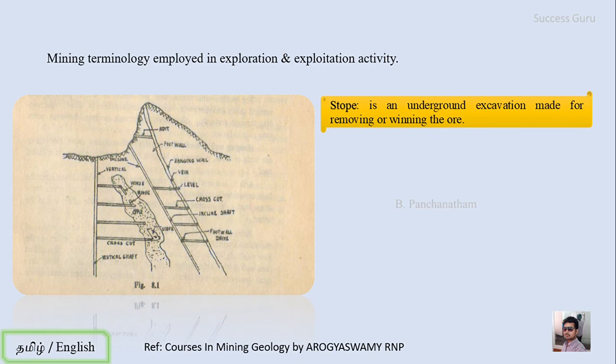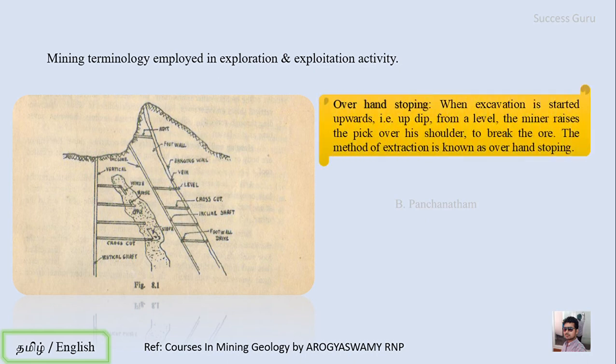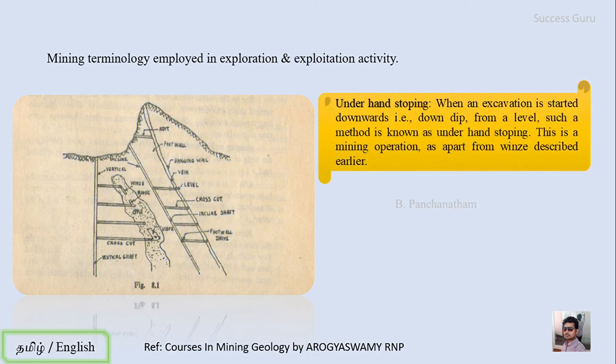The next term is stope — an underground excavation made for removing or winning the ore. If the stope is made above your shoulder level it is called an overhand stope; if done below your feet it is called an underhand stope, which is quite equivalent to the winze.